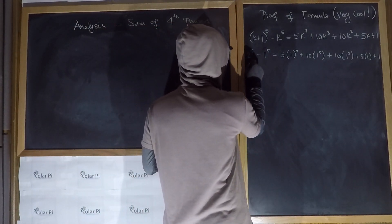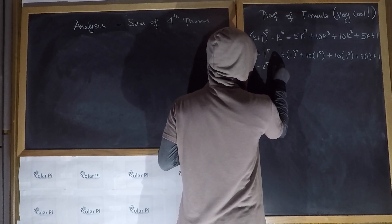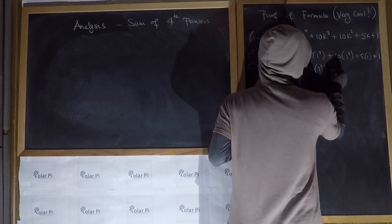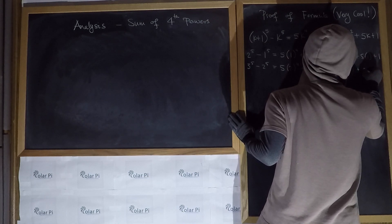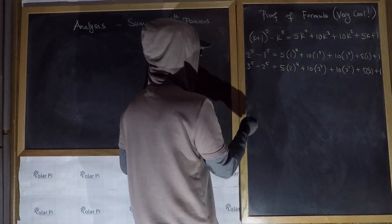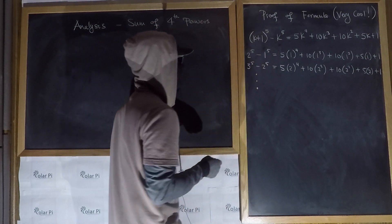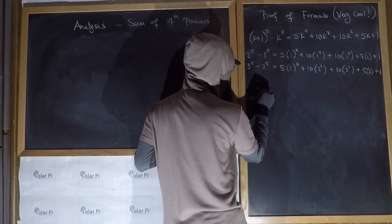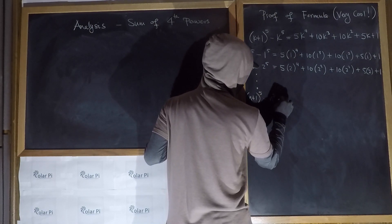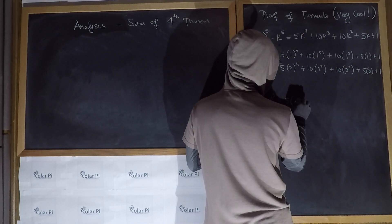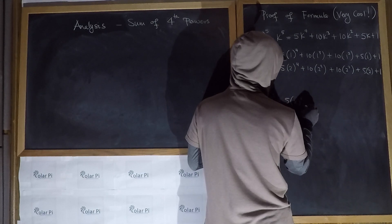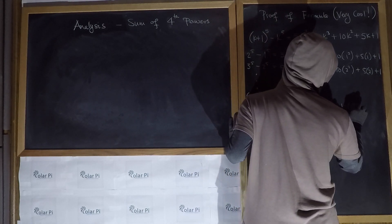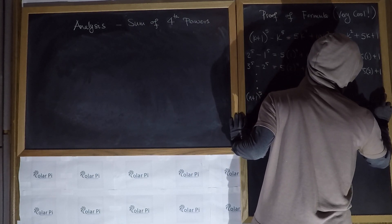And when k is equal to 2, we get 3 to the 5th minus 2 to the 5th, equals 5 times 2 to the 4th, plus 10 times 2 cubed, plus 10 times 2 squared, plus 5 times 2, plus 1. And we proceed in this manner on and on to k equaling n. When k is equal to n, we get n+1 to the 5th minus n to the 5th, equals 5 times n to the 4th, plus 10 times n cubed, plus 10 times n squared, plus 5 times n, plus 1.